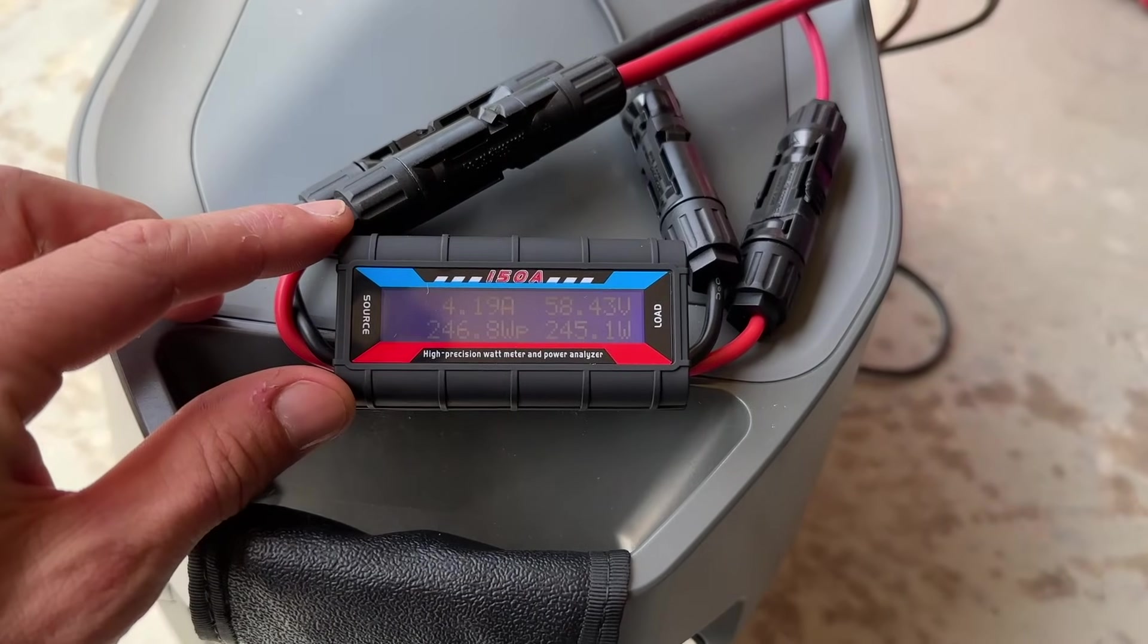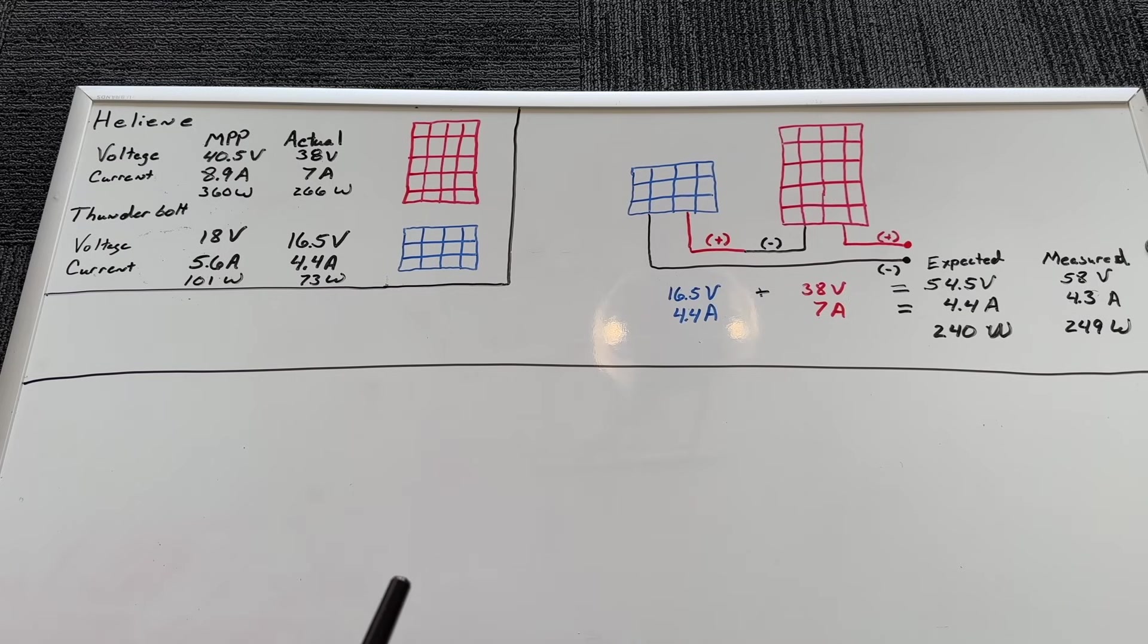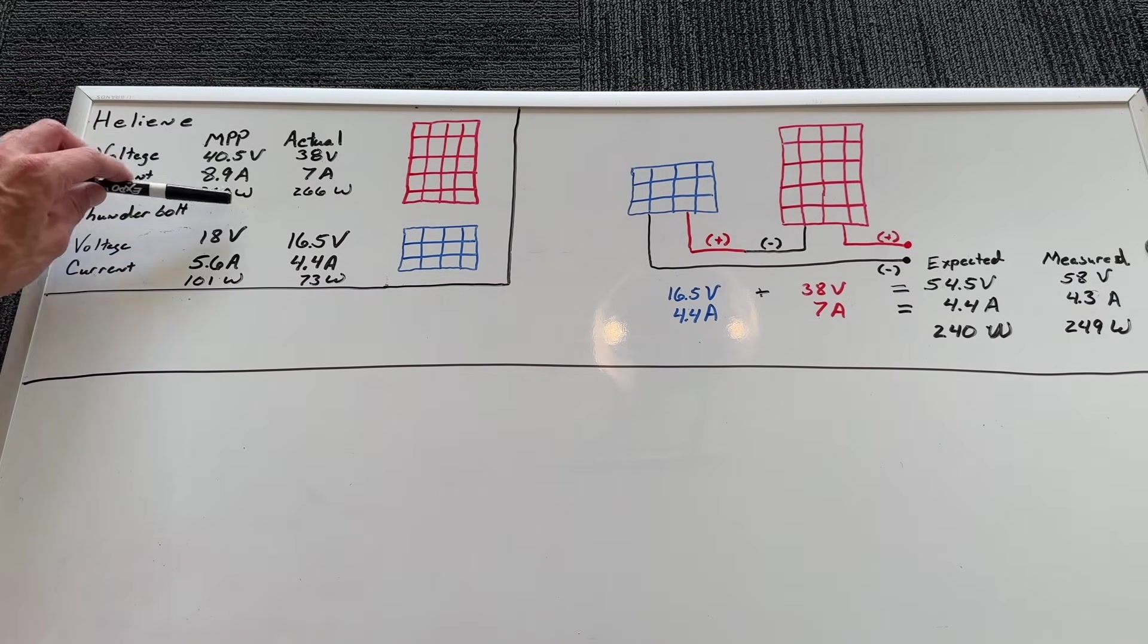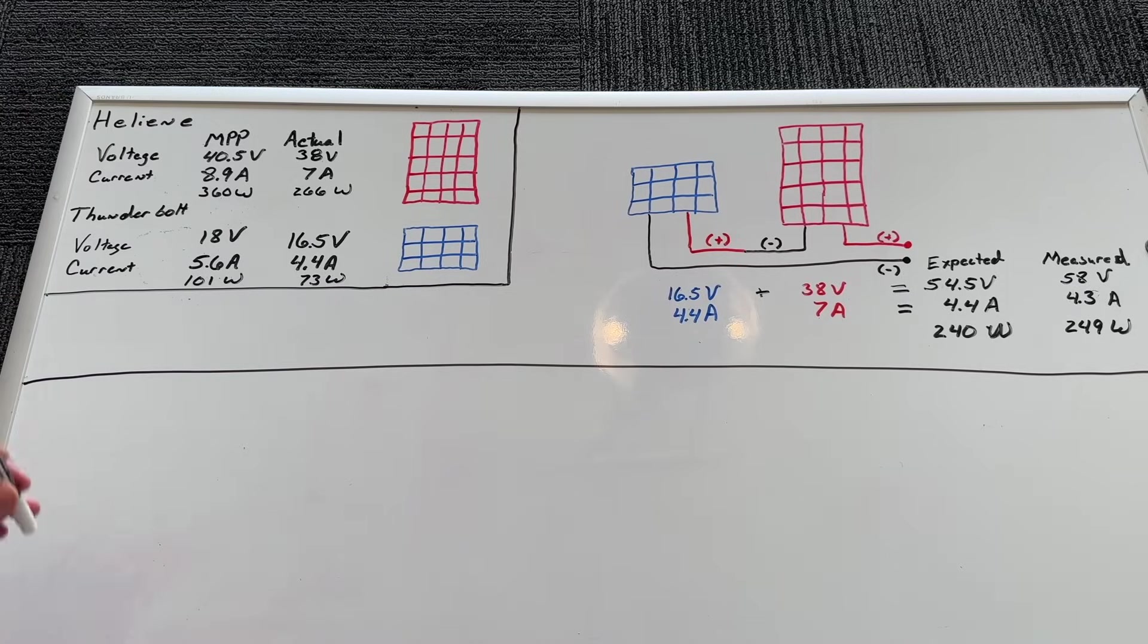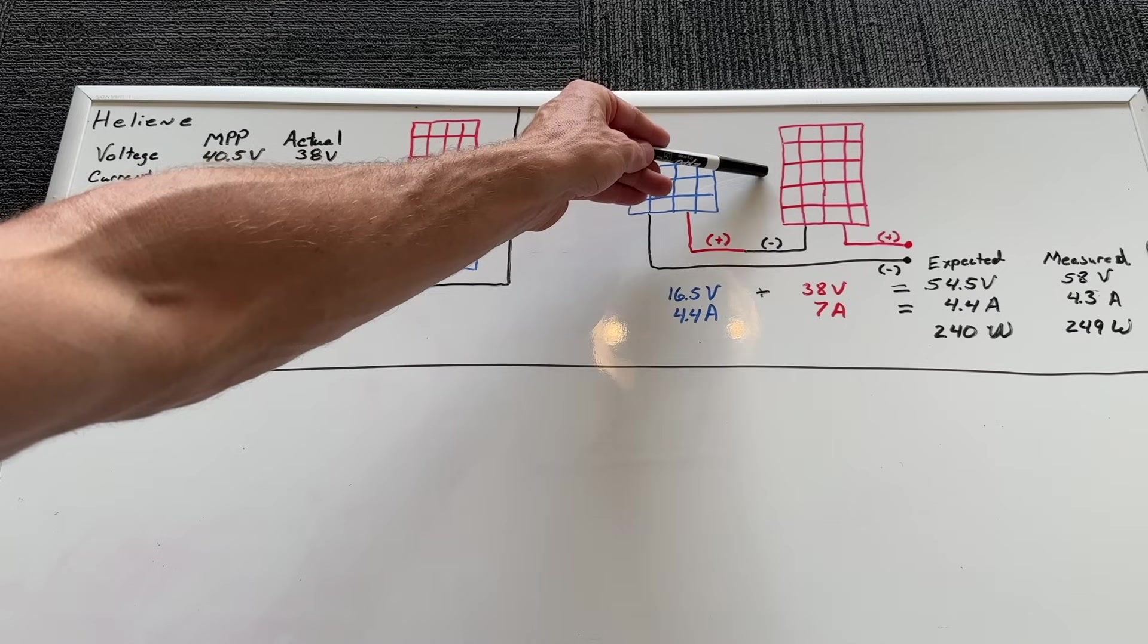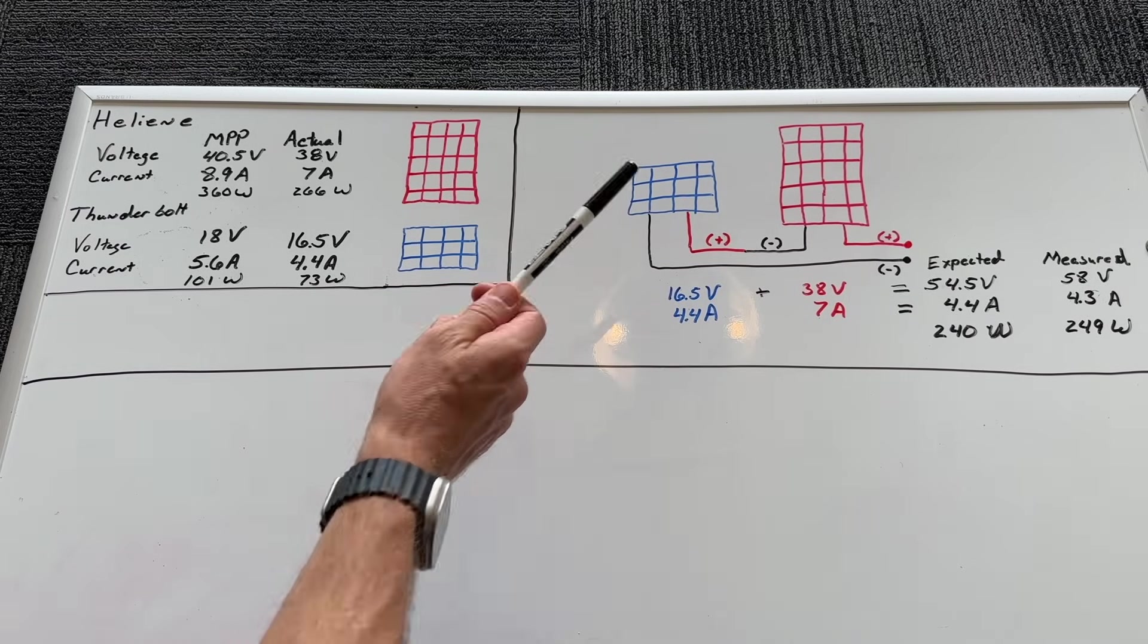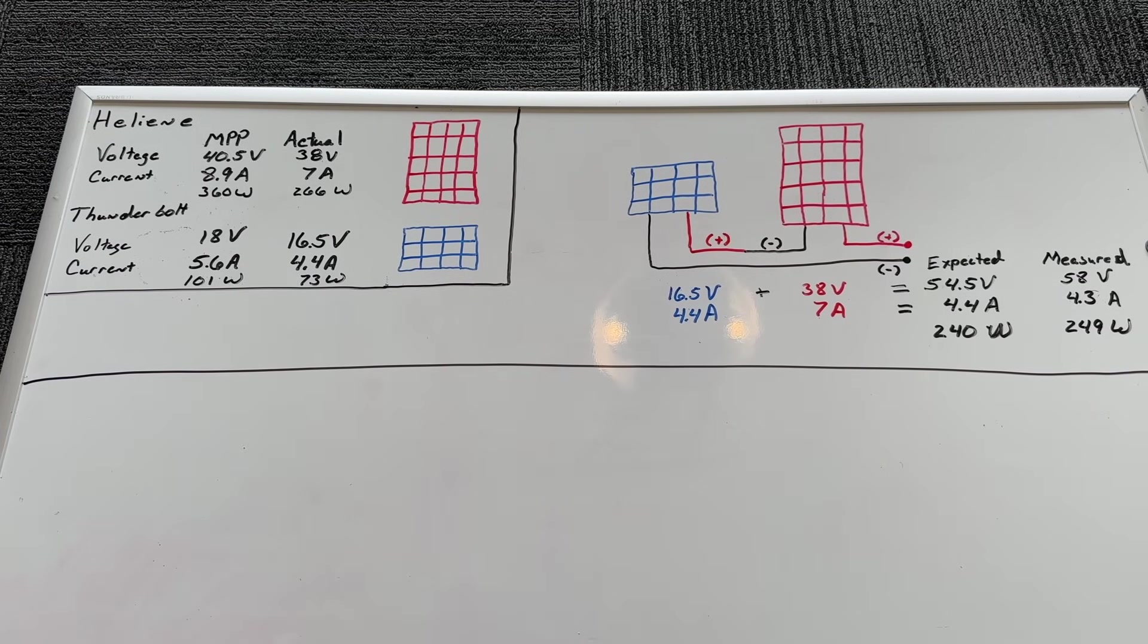The resultant here on the power analyzer is about 58 volts, 4.2 amps, and right around 250 watts. So wait a minute, if you remember the Helium, which is a 360 watt panel at maximum power point, we actually got a little bit less than 266 watts. But then when we wired in series, we took a Thunderbolt, wired it in series with the Helium, and what we actually got was right under 250 watts. So by adding a 100 watt panel in series, we actually lessened the amount of power we got.